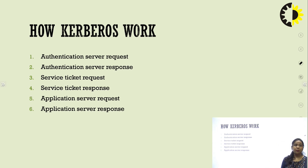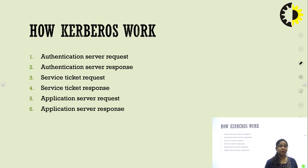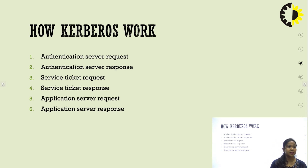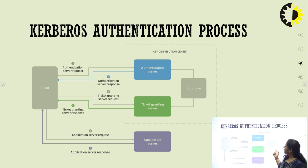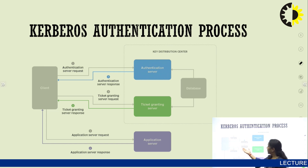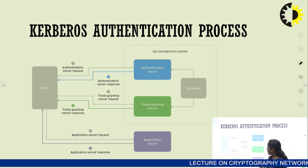How Kerberos works involves six steps: authentication server request, authentication server response, service ticket request, service ticket response, application server request, and application server response. At each of the six steps, different services are provided and the complete communication is securely done over the network, with the complete KDC process covering authentication server request, authentication server response, ticket granting request, ticket granting response, application server request, and application server response.